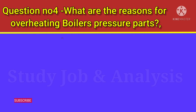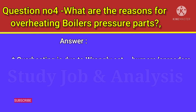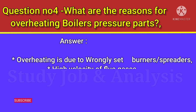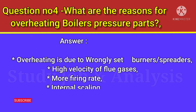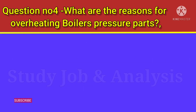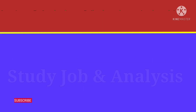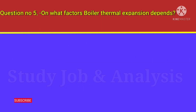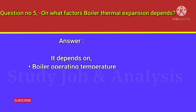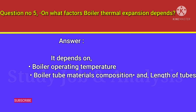Answer: Overheating is due to wrongly set burners or spreaders, high velocity of flue gases, high firing rate, and internal scaling. Question number five: on what factors does boiler thermal expansion depend? Answer: It depends on boiler operating temperature, boiler tube material composition, and length of tubes.